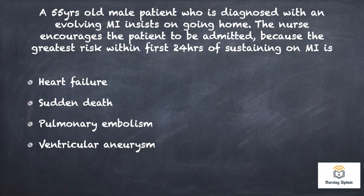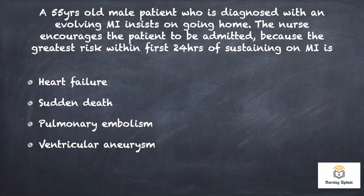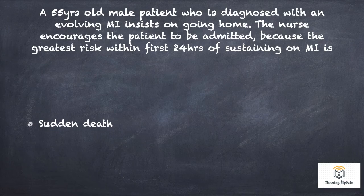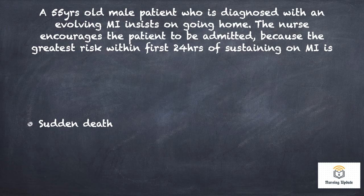A 55-year-old male diagnosed with an evolving MI insists on going home. The nurse encourages the patient to be admitted because the greatest risk within 24 hours of sustaining an MI is: heart failure, sudden death, pulmonary embolism, or ventricular arrhythmia. Answer is sudden death. Patients on thrombolysis within 4-6 hours may still go into cardiogenic shock on day 1 after thrombolysis.